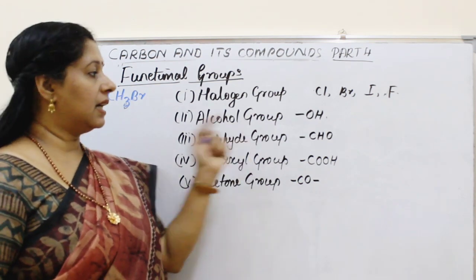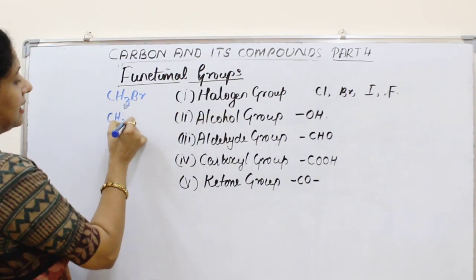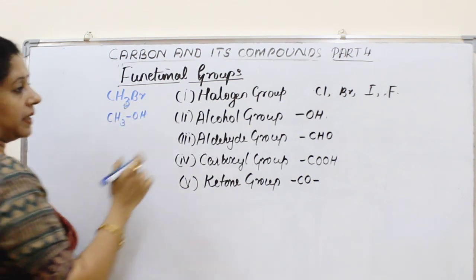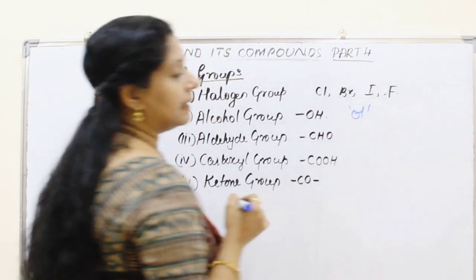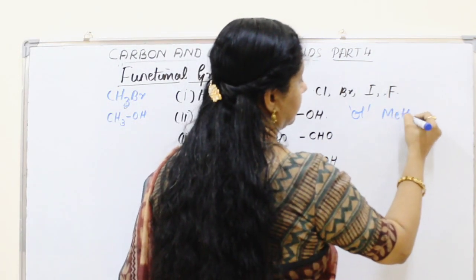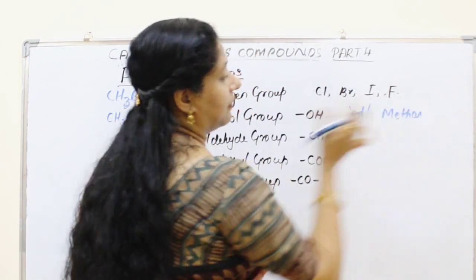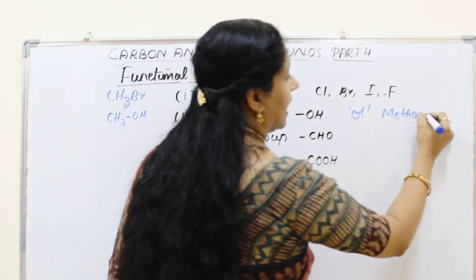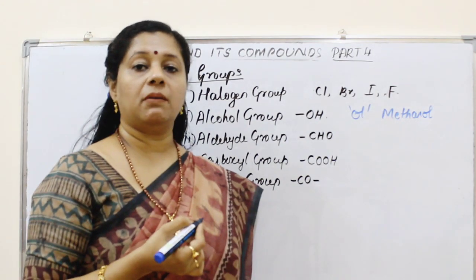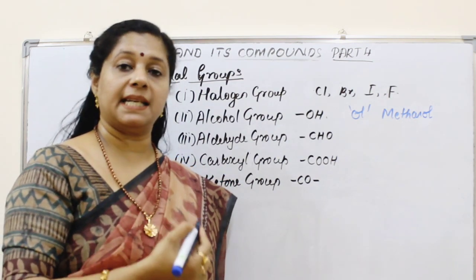The second functional group is the alcohol group. Here, instead of a halogen, an OH group is attached. We get CH3OH because one hydrogen is removed to attach this group. When the OH group is present, the name ends with '-ol'. The parent alkane 'methane' loses the final 'e' and gains 'ol' to become methanol. Similarly, ethane becomes ethanol, propane becomes propanol, butane becomes butanol, and pentane becomes pentanol.